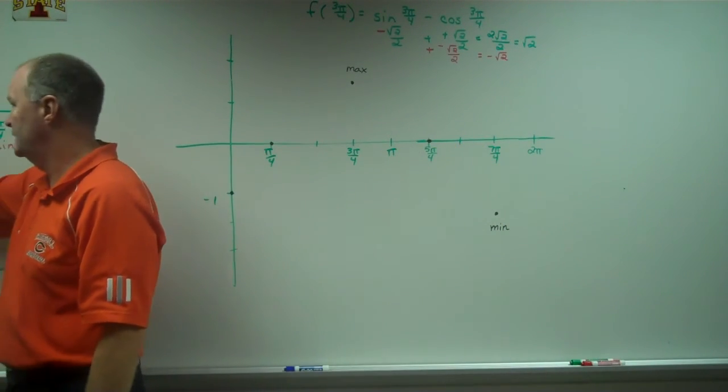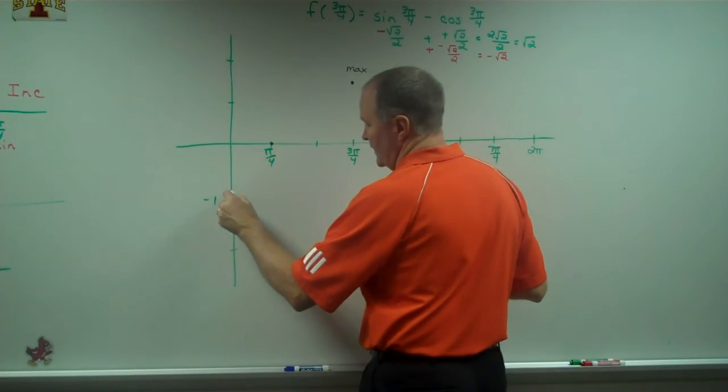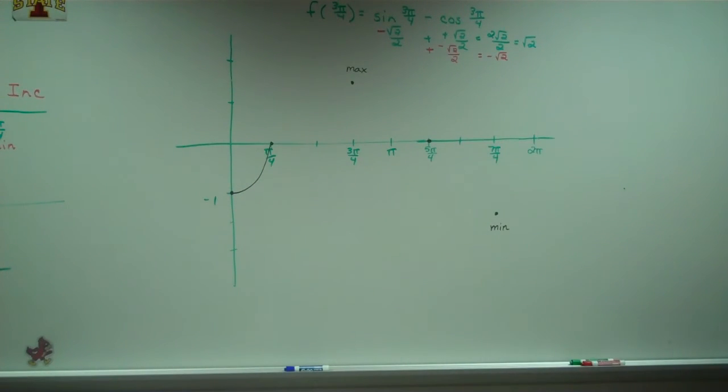Concave up and increasing. Looks like that. From π over 4 to 3π over 4, I'm still increasing,